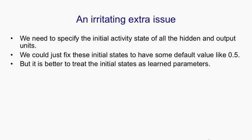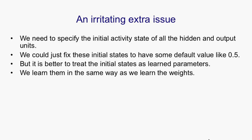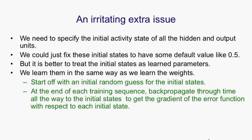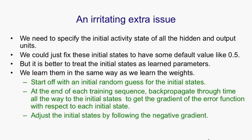So we can actually learn the initial states. We treat them like parameters rather than activities, and we learn them the same way as we learn the weights. We start off with an initial random guess for the initial states, that is, the initial states of all the units that aren't input units, and then at the end of each training sequence, we backpropagate through time all the way back to the initial states, and that gives us the gradient of the error function with respect to the initial state.